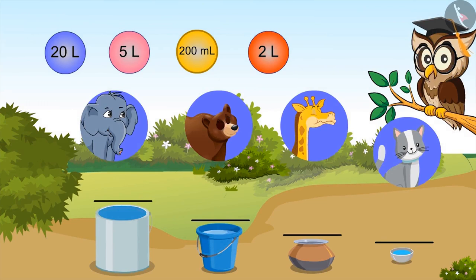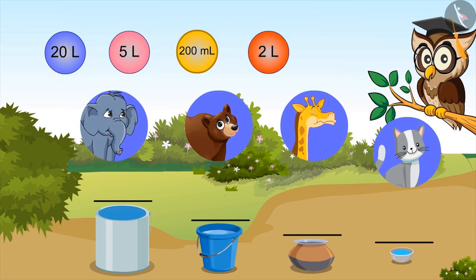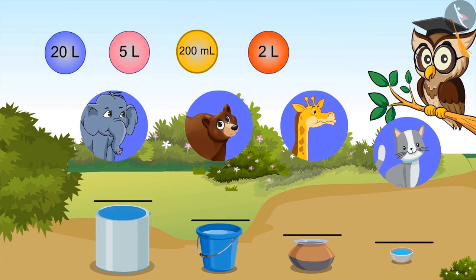Look carefully at these vessels and fill in these blanks according to the given measurement. Kids, you can pause the video to find out the answer. First, I will tell. Tell? Drum. Because it is the largest of all and can carry 200 ml of liquid. Oh no, no. Just now sir has told that milliliters is smaller than liters. One thousand milliliters makes one liter, so two thousand milliliters is much less than one liter. So according to you, what will be the right answer? According to me, a drum has a capacity of twenty liters.